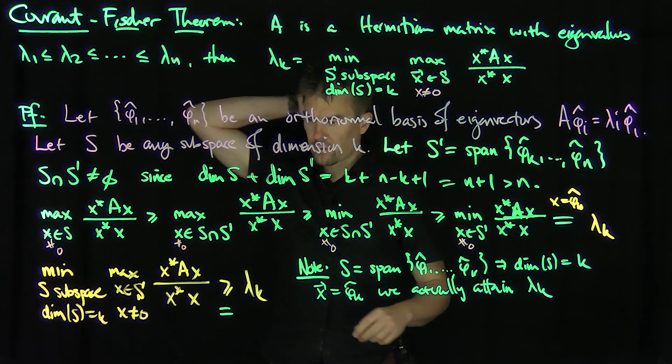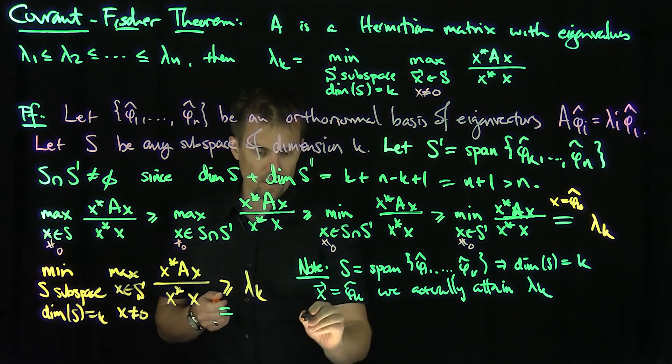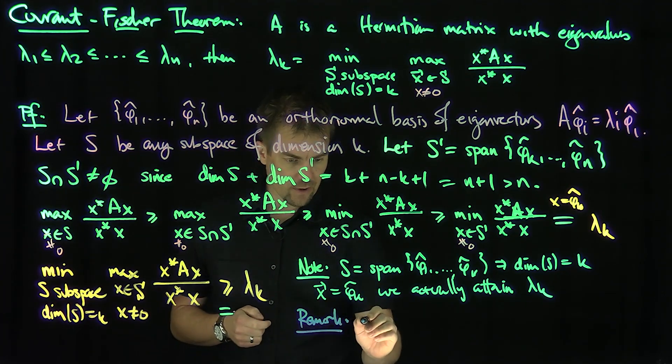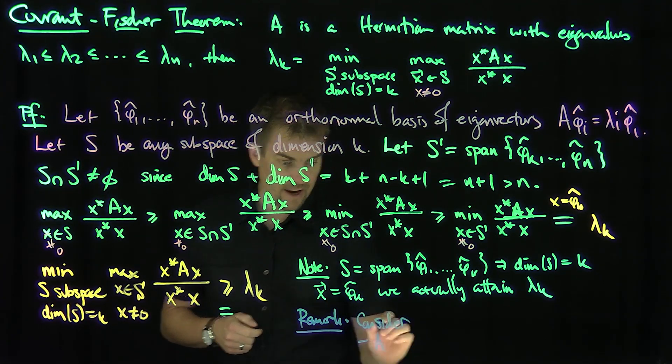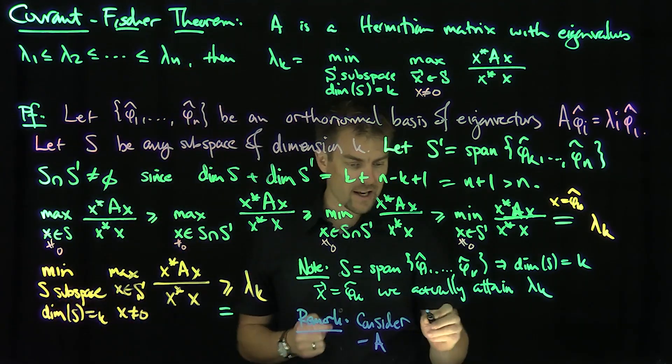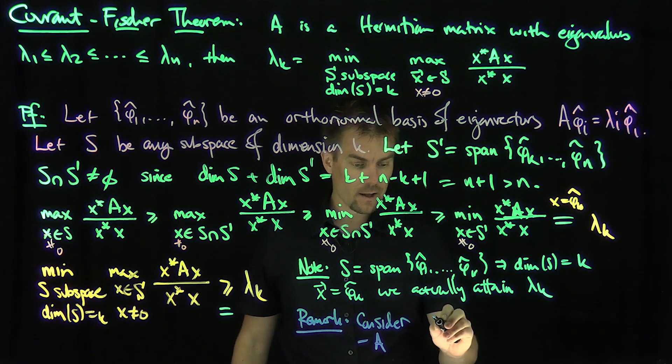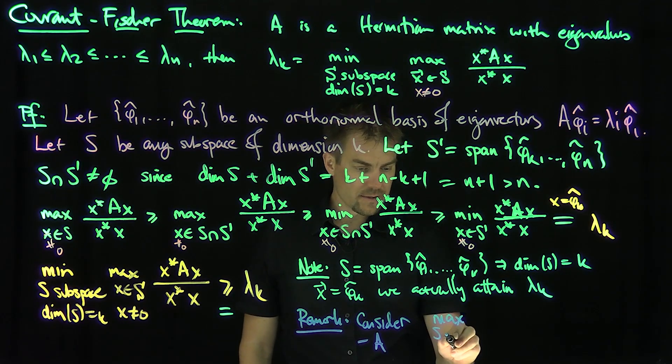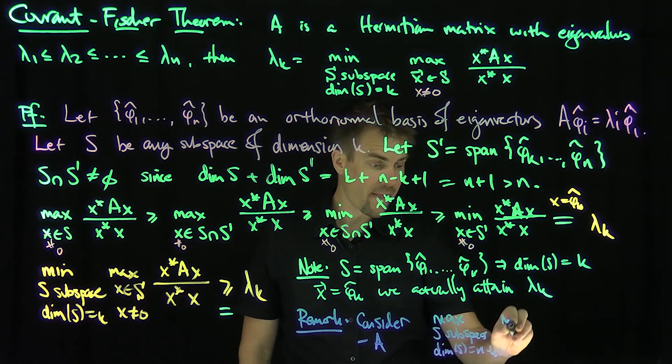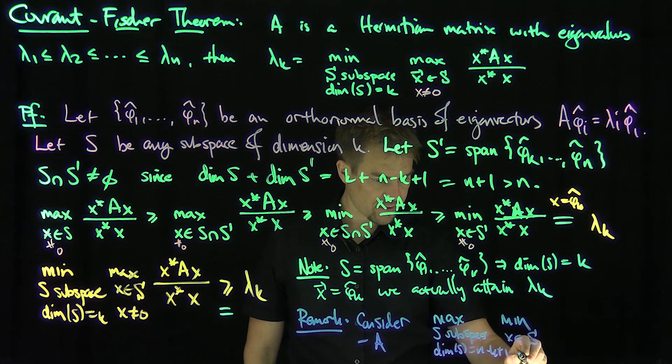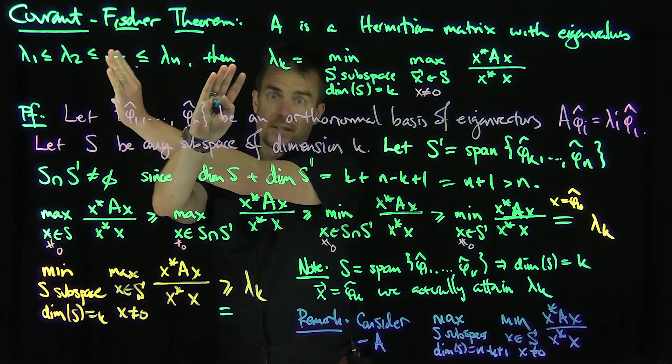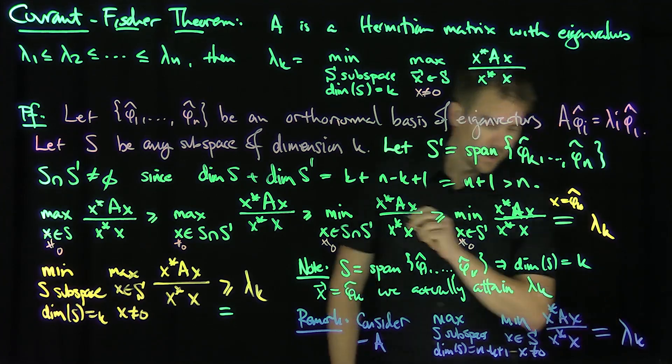And then there's the corresponding dual result. We should remark that we can do this in more generality. Our remark is that by considering negative A, the eigenvalues of negative A are going to be -λₙ, -λₙ₋₁, and then -λ₁ is going to be the largest now. So they just interchange roles. So by considering negative A, we can conclude by flipping the maxes and the mins, I can conclude the max, and now the dimension of S is S subspace with dimension dim(S) = n - k + 1, and then the minimum over all vectors x in these subspaces, x ≠ 0 of our Rayleigh quotient x*Ax over x*x. By symmetry, looking at negative A, the fact that these things flip orders, we can also conclude that this thing is equal to λₖ as well.